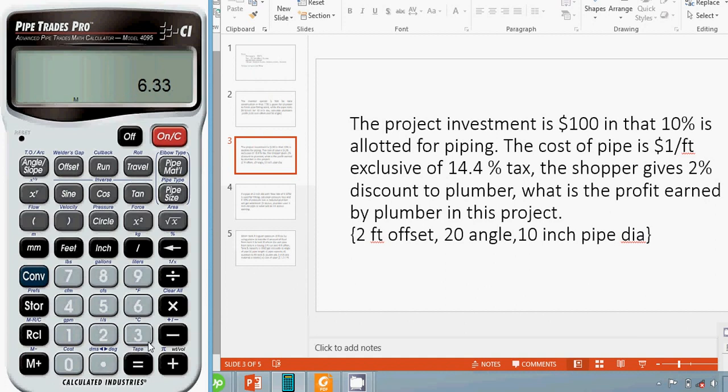$6.33 plus $0.91152, so this is the total cost of pipe. When the shopper is giving a 2% discount, we have to find the 2% value. So it is $0.1448. This value we have to subtract from the total cost.